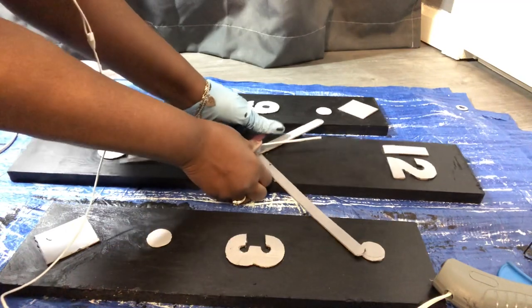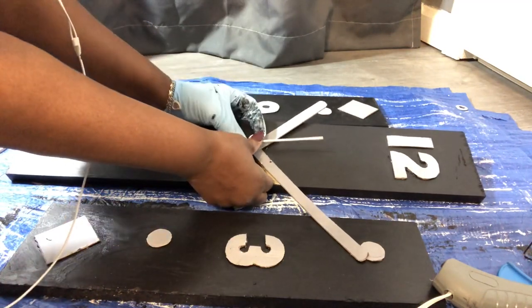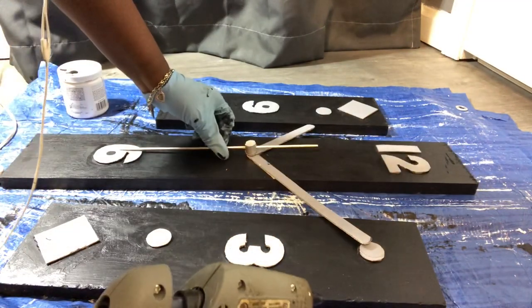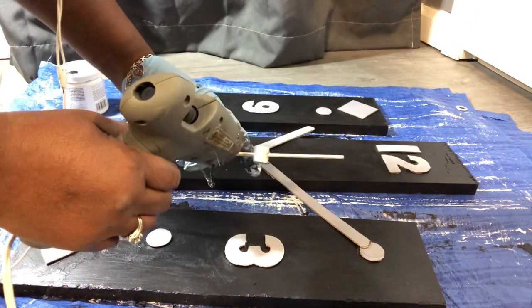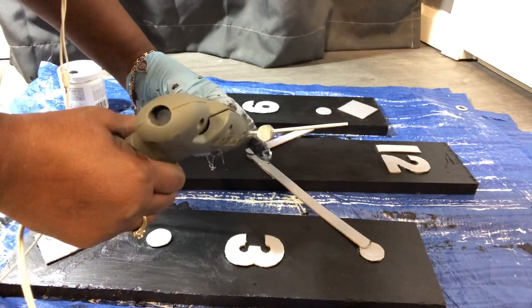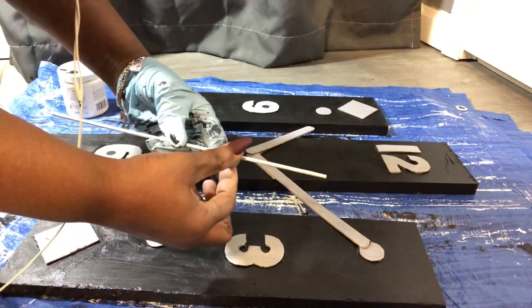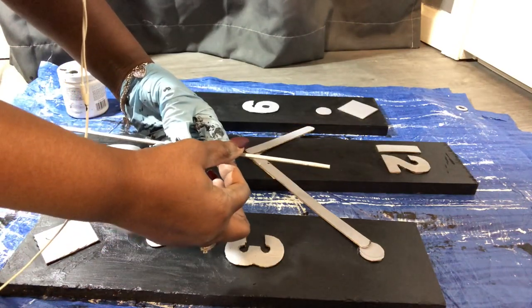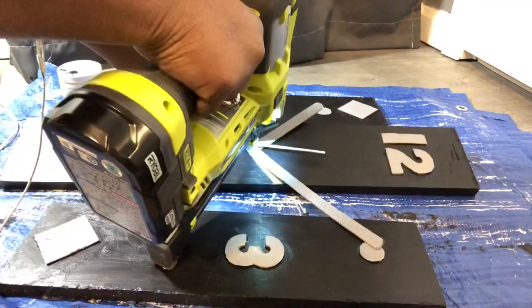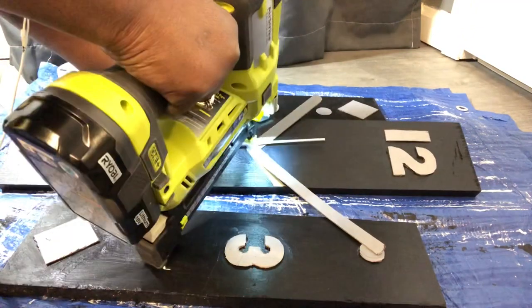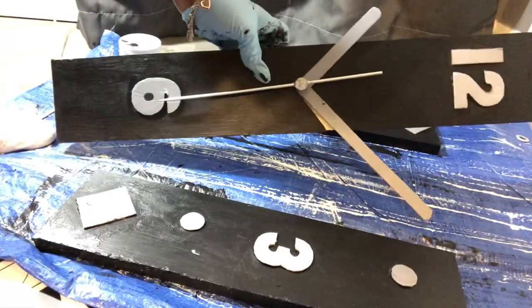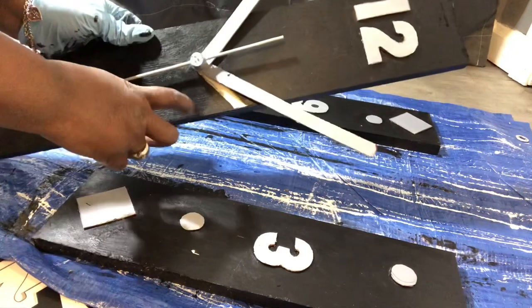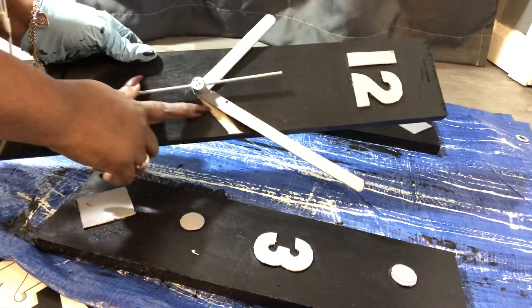I'm just going to nail this on with my nailer. I'm going to go ahead and hot glue this little area right here where the dowel is going to be, and then just push the dowel on over in that area. That's the way that's going to be.